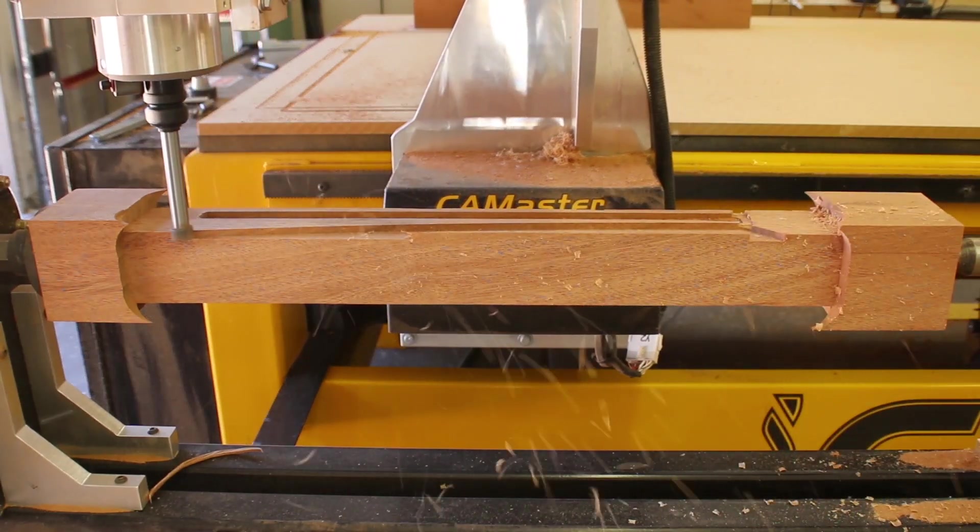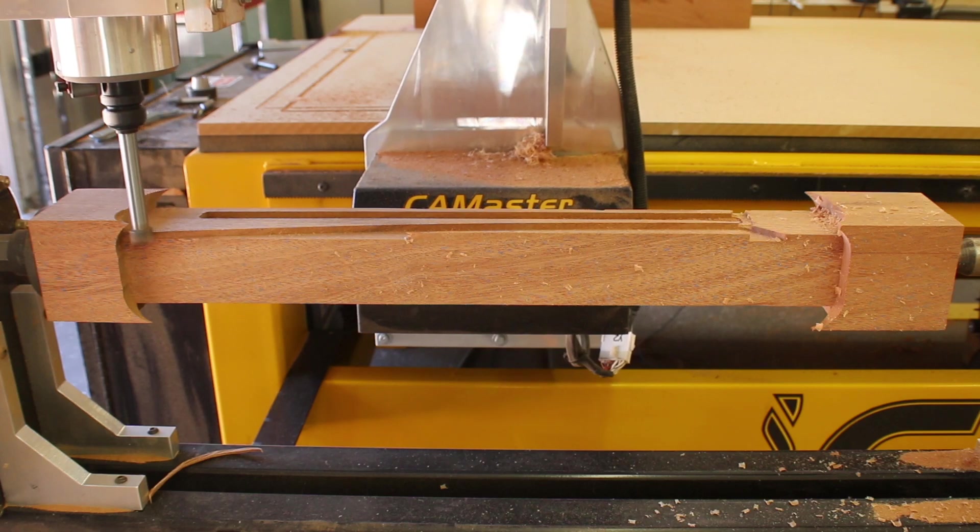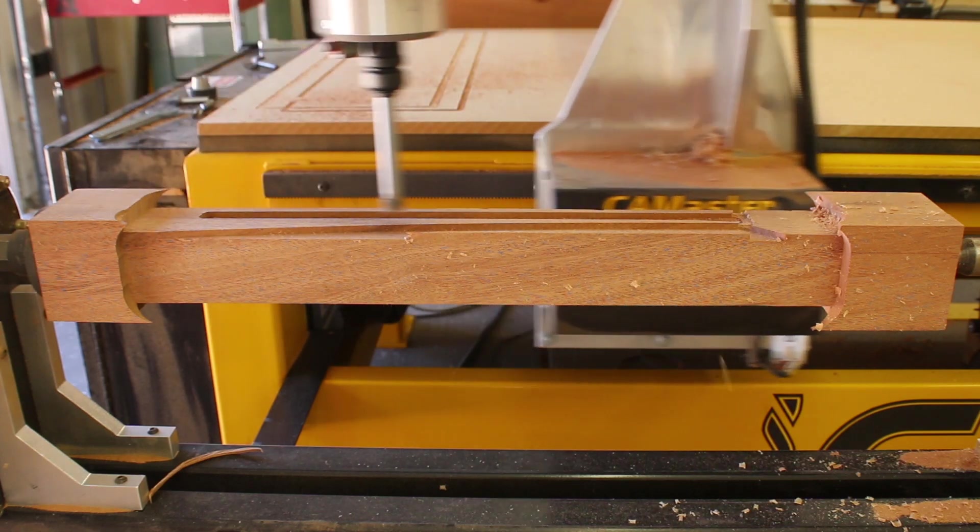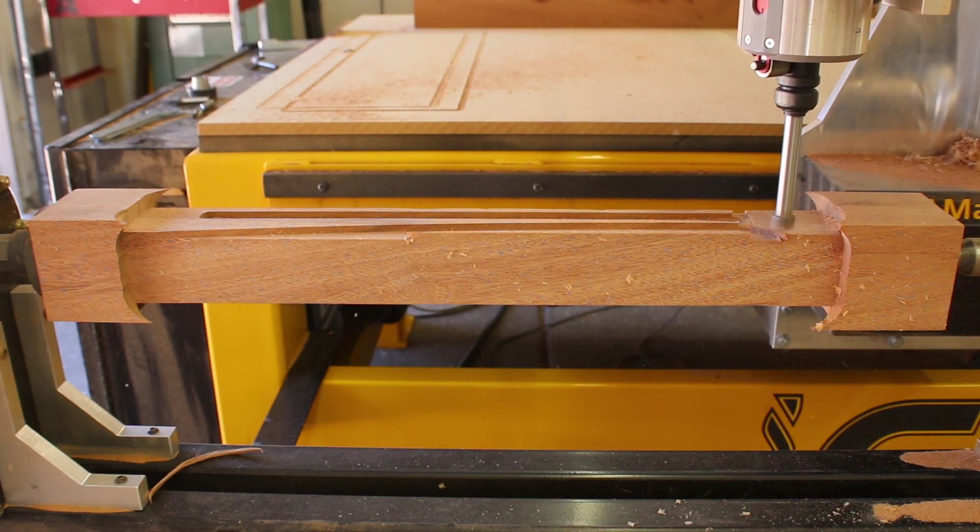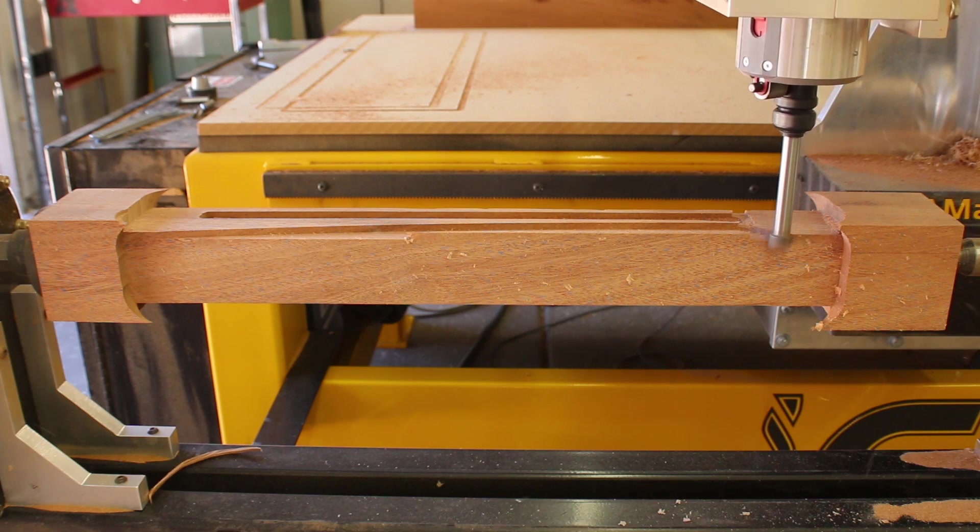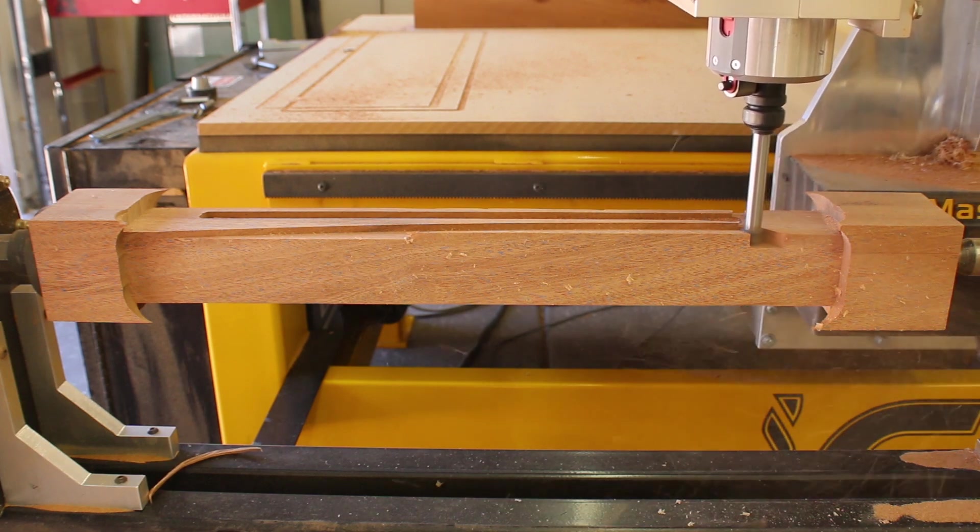And so this runs through and cuts down through all 2.5 inches of the material. Now if you recall when we were in Vectric, I told you we have two sides, right? So this is side one. And then when this is done, we're going to rotate the material 90 degrees and cut side two.